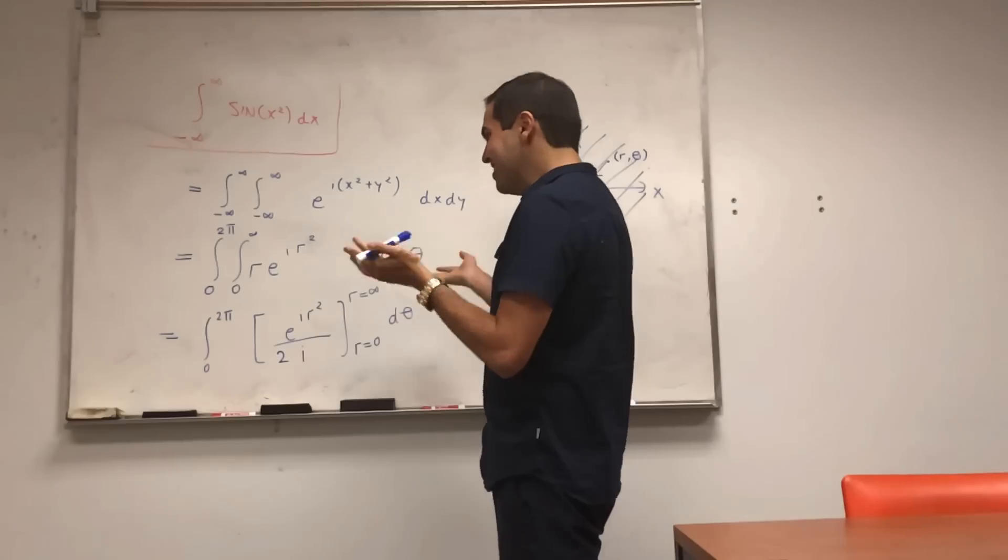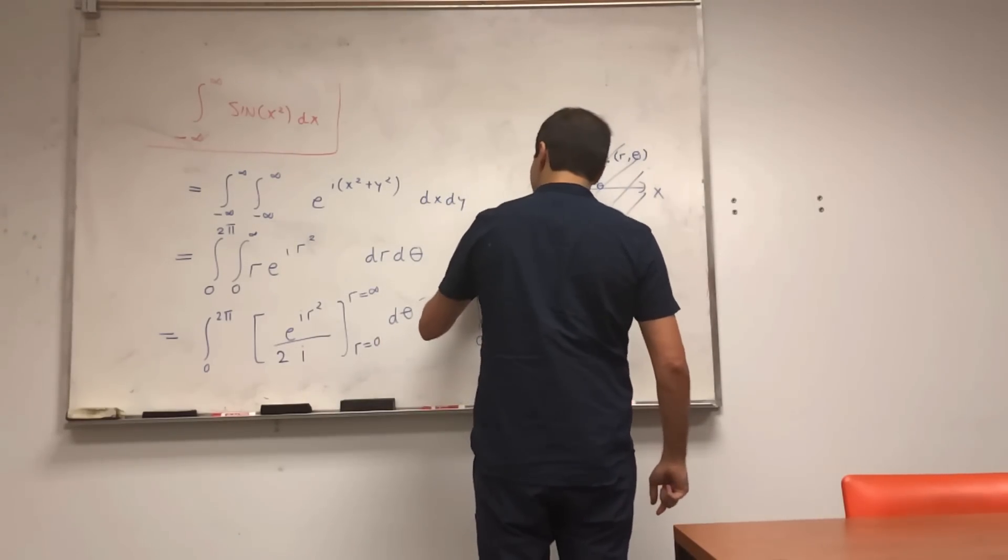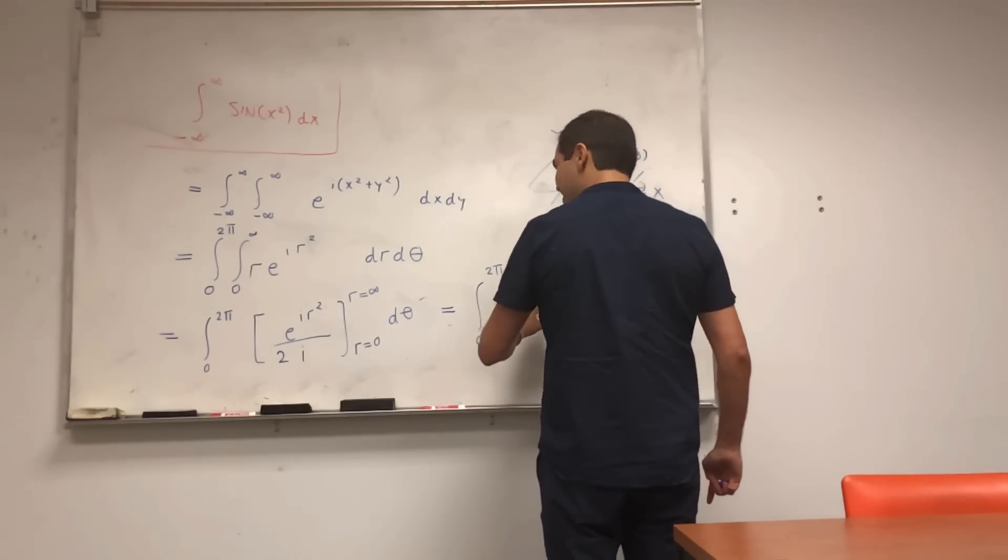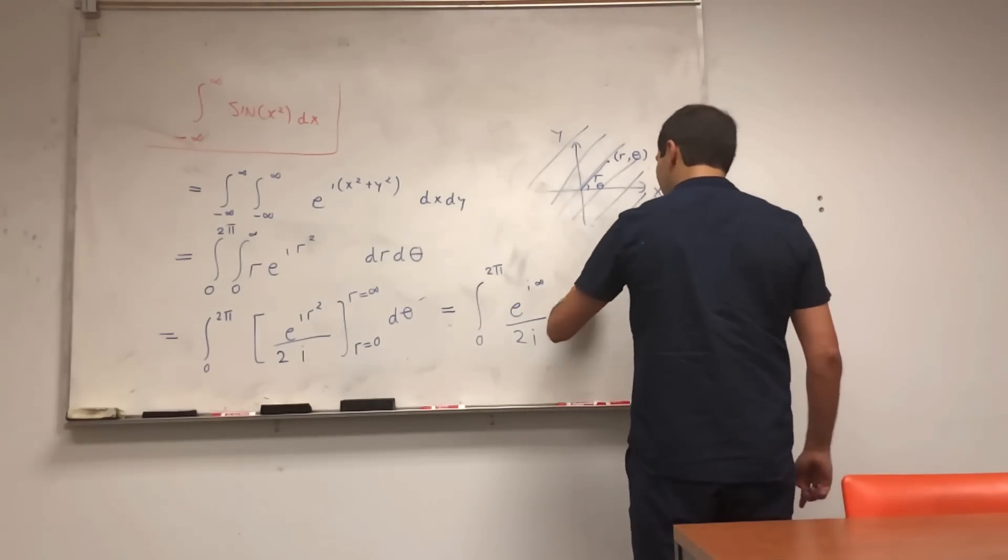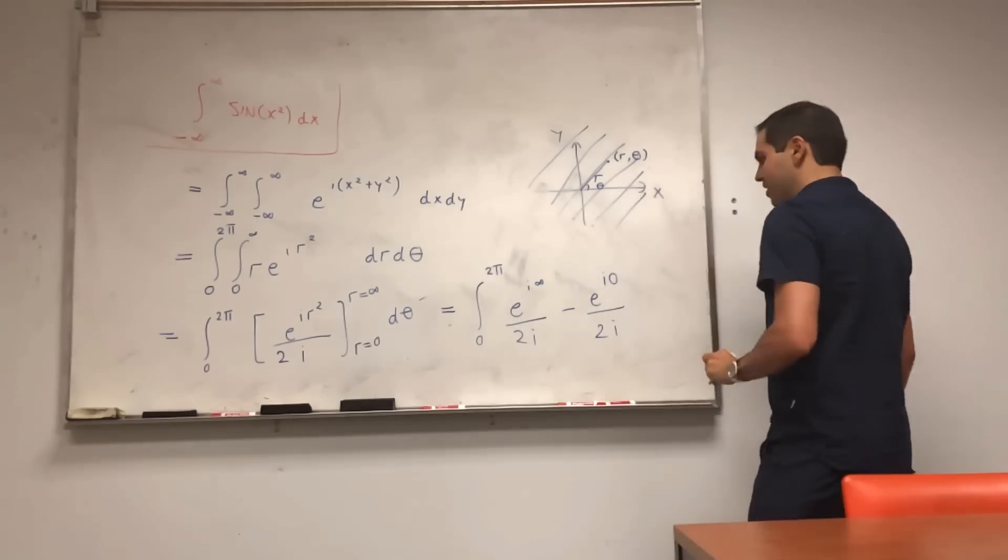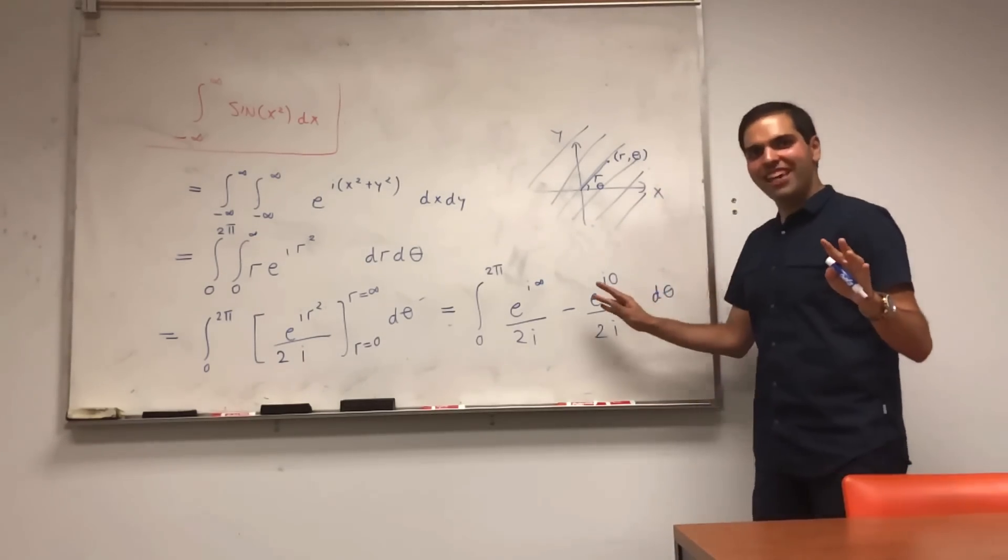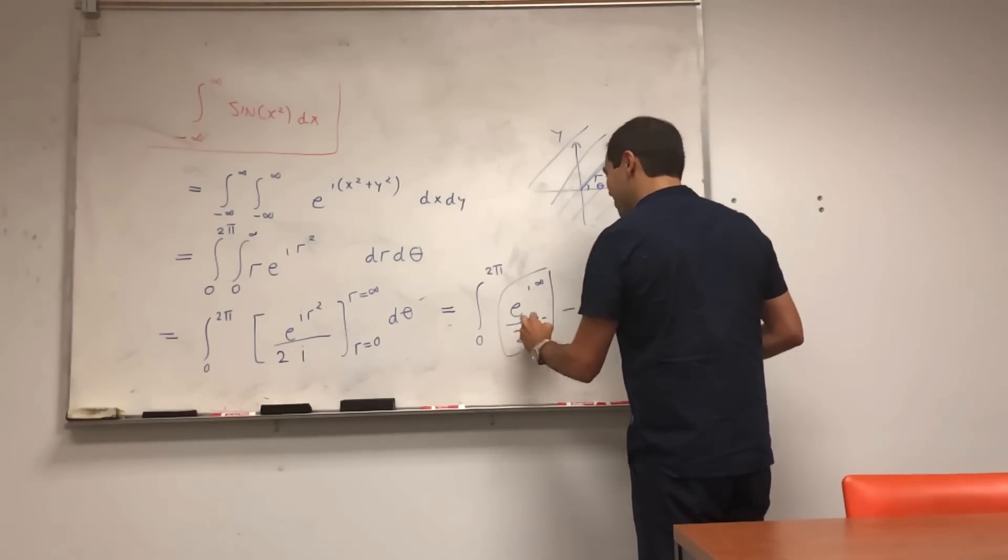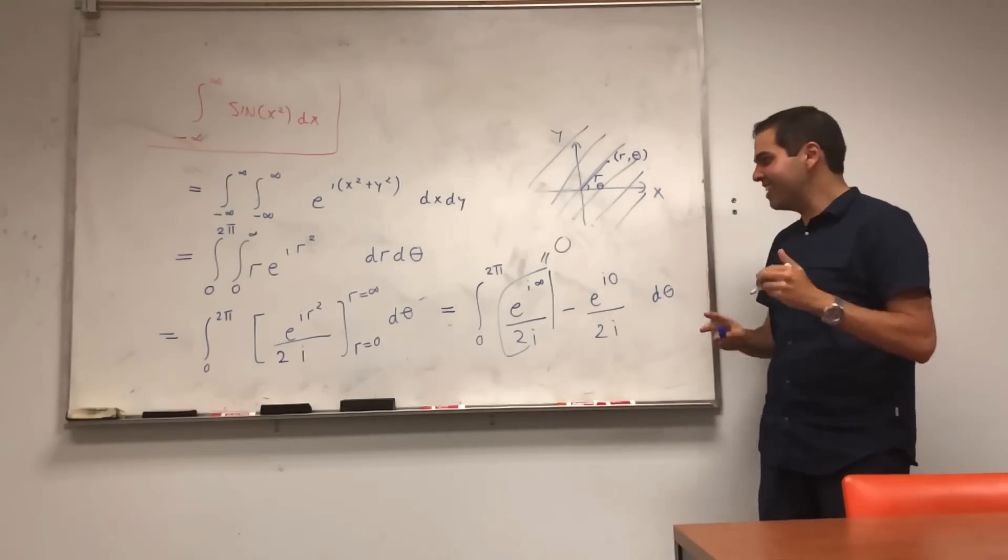And also, we need to divide it by i, r equals zero to r equals infinity d theta. And alas, here is where the non-rigorous part comes in. Well, technically, what we have is integral from zero to two pi, e to the i to the infinity over two i, minus e to the i zero over two i, d theta.